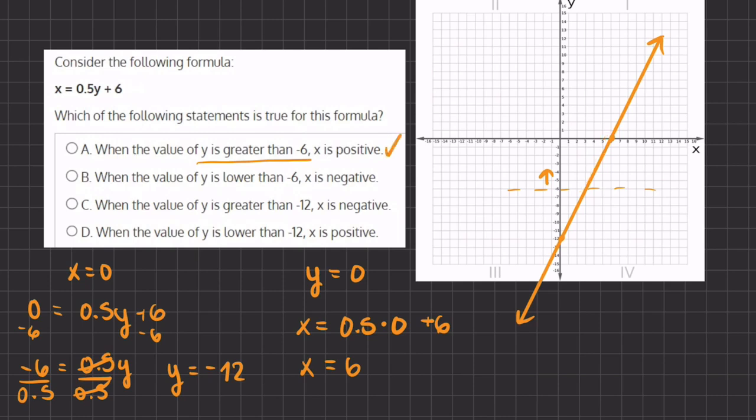Let's take a look at why b, c, and d are incorrect. b states when the value of y is lower than negative 6, x is negative. Well, that means this region right over here when y is lower than negative 6.